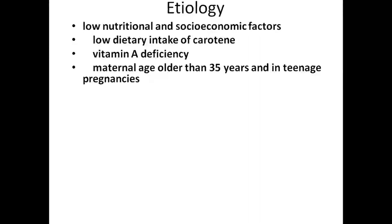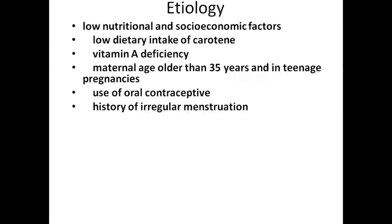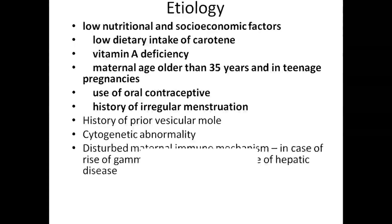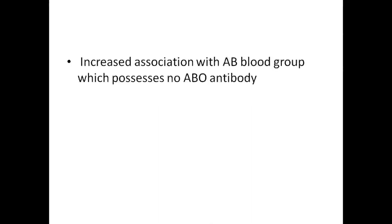Etiology: it may be because of low nutrition and socioeconomic status, low dietary intake of carotene, vitamin A deficiency, maternal age older than 35 years and in teenage pregnancy, use of oral contraceptives, history of irregular menstruations, history of prior vesicular mole, cytogenic abnormality, disturbed maternal immune mechanism in case of rise of gamma globulin level in the absence of hepatic disease, and increased association with AB blood group which possesses no ABO antibody.